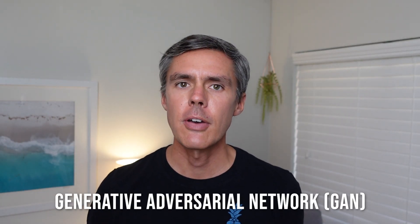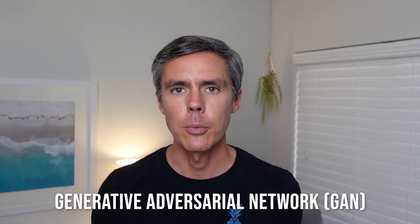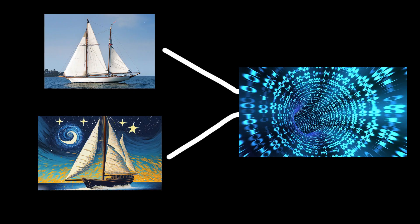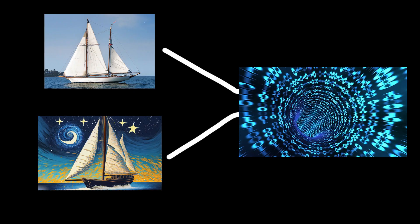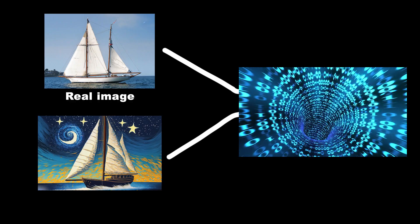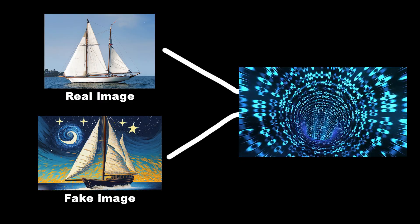AI art programs can also use something called generative adversarial networks, or GANs, to generate images. GANs involve two different neural networks that work together to create images. One network generates images, while the other network works to identify whether those images are real or fake.